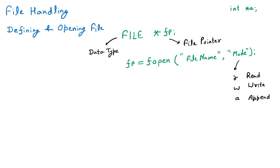The file name can be any file you want to create or open. If the file is available in the system it will open, otherwise if you provide a new file name it will be created. For example, the file name demo.txt — any file name we can provide. fopen is the function; there are many functions available in file handling such as fopen, fclose, fseek, and various others. We will discuss functions one by one later, but first we are discussing how to open the file and the different modes available.